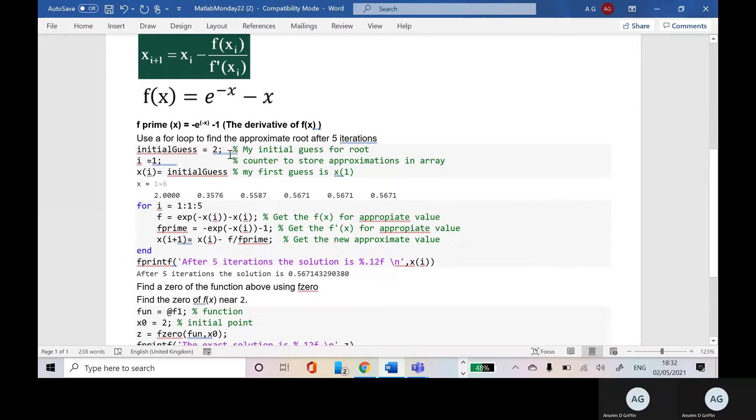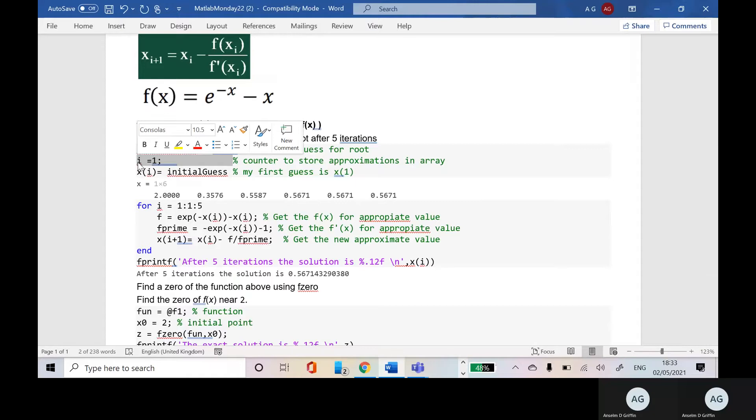My initial guess is 2. I'm not too far away from the root. And remember, I'm going to store six values. I have five iterations, but the fifth iteration will give me the sixth value.